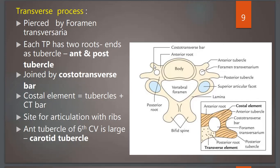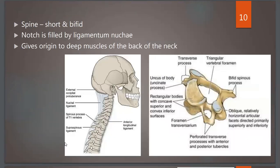The costal element formed by the tubercles and costotransverse bar is the site for articulation with ribs in the thoracic cage. The anterior tubercle of the 6th cervical vertebra is large and is given the special name carotid tubercle, because it is related to carotid vessels. The posterior projection you see is the spine, which is short and bifid, and the notch is filled with ligamentum nuchae.